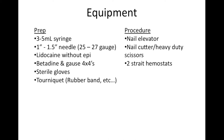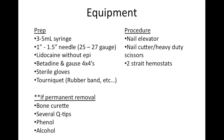For the procedure itself, you'll need a nail elevator, a nail cutter or heavy-duty scissors, and at least two hemostats. If you're performing a permanent removal, you'll also want a curette, several Q-tips, phenol, and alcohol to neutralize the phenol. For cleanup, you'll want antibiotic ointment, gauze pads, and tape.